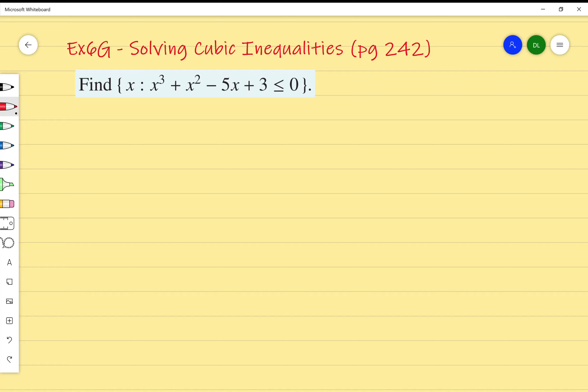This is exercise 6G on solving cubic inequalities on page 242 of your textbook. This is really just an extension of what you already know, combining understanding of quadratic inequalities and cubic graphing. I've got find where x cubed plus x squared minus 5x plus 3 is less than or equal to 0. What I'm going to do is treat it as if it is just an equal sign for now. So from there I just have to graph it.